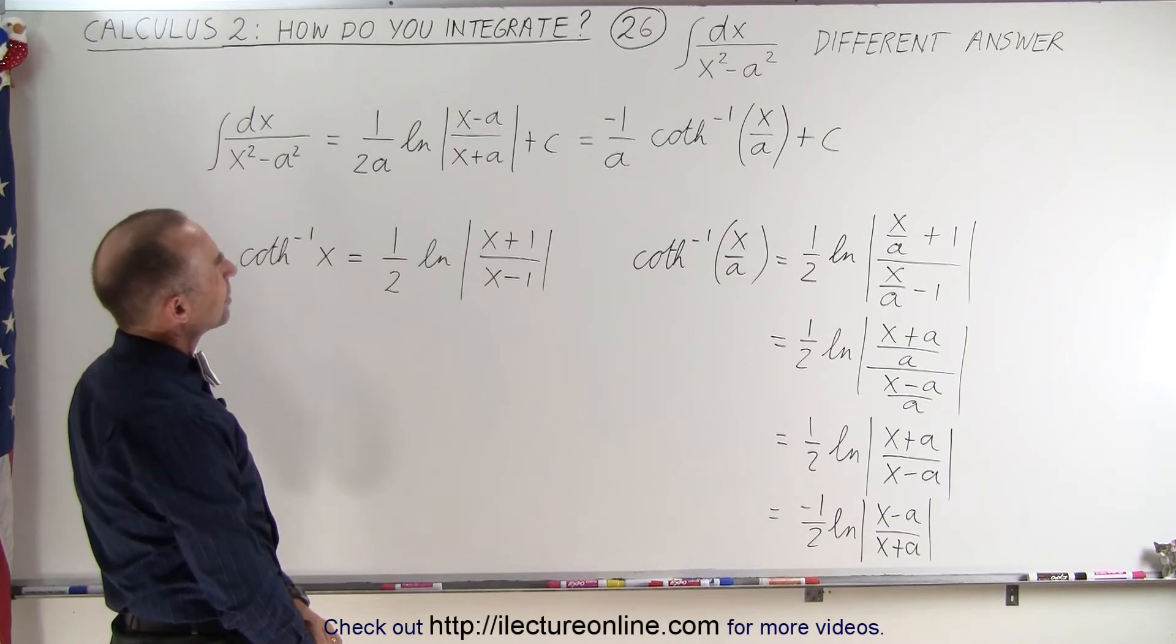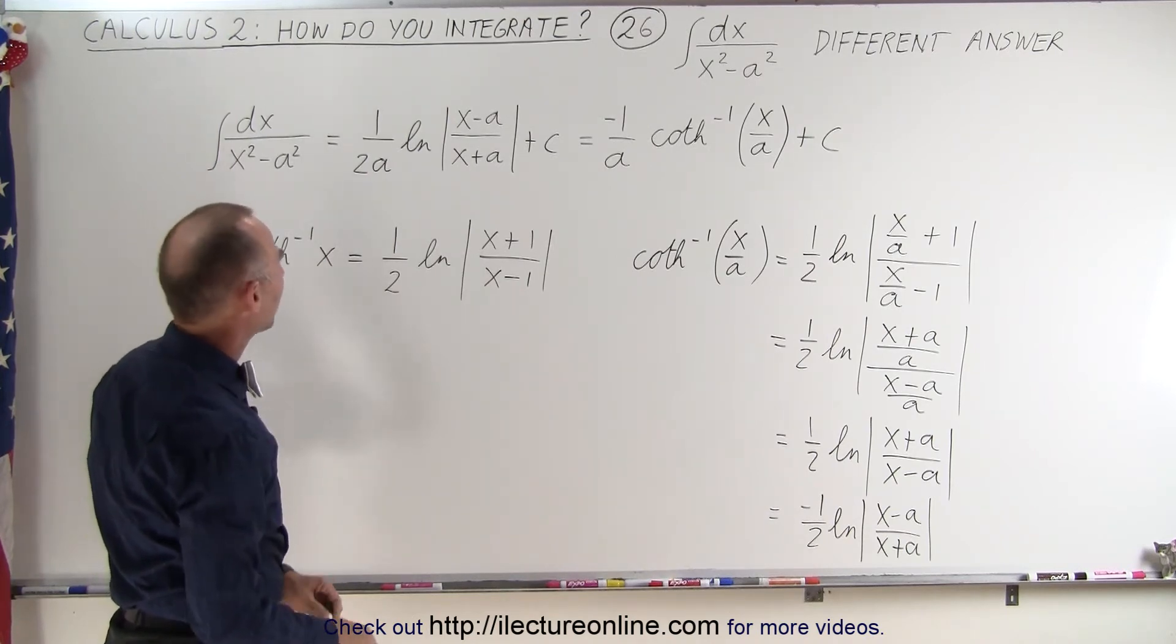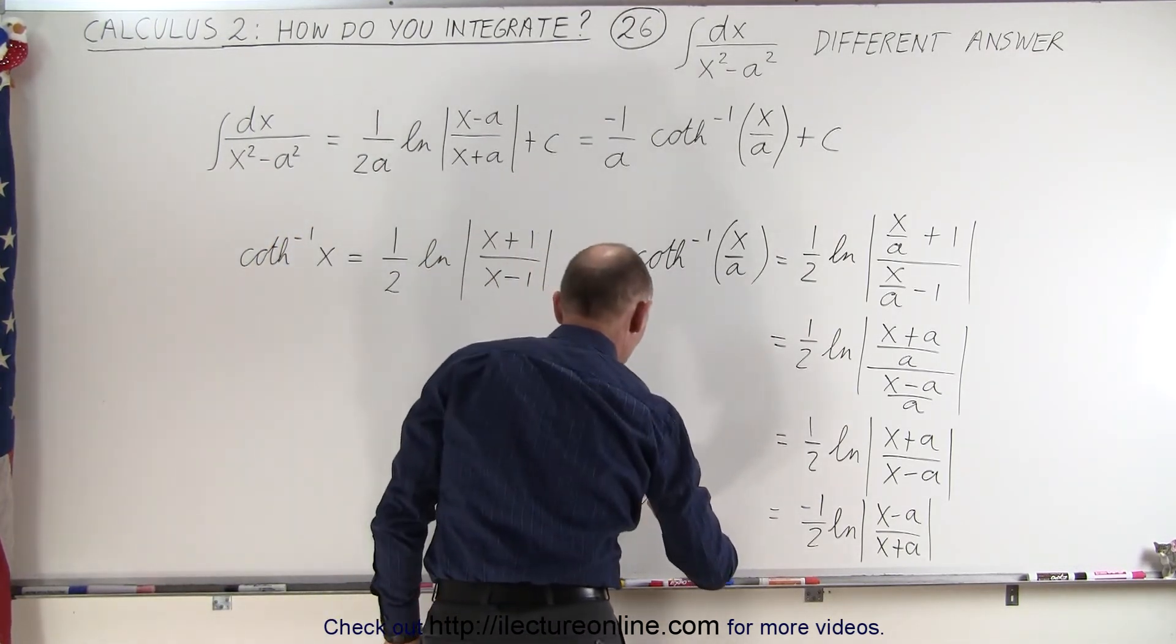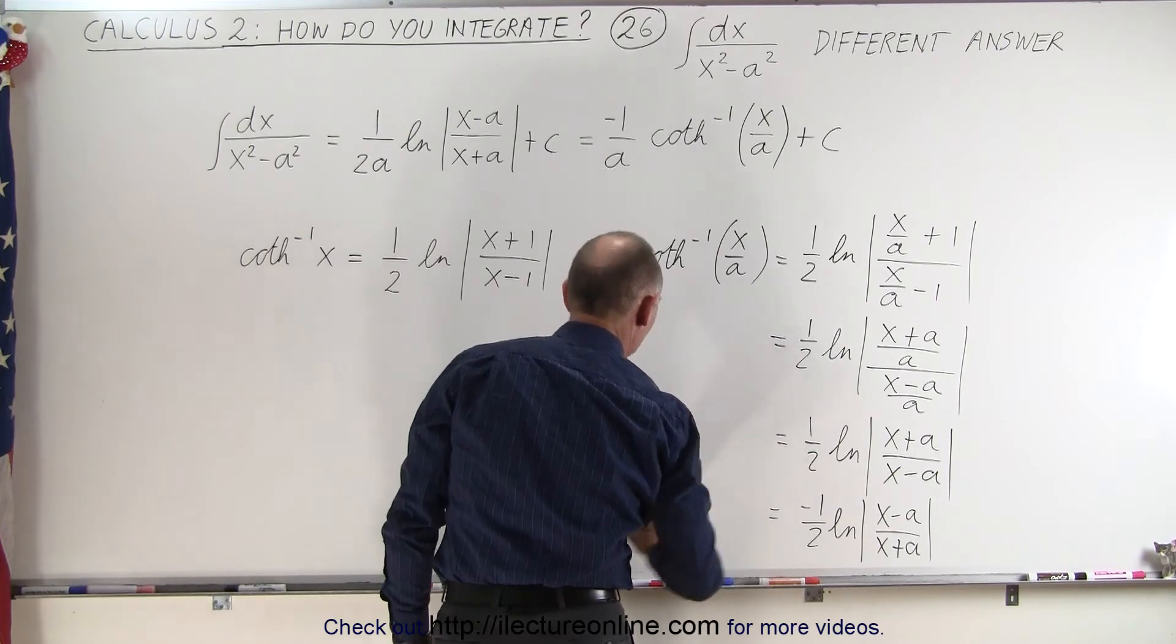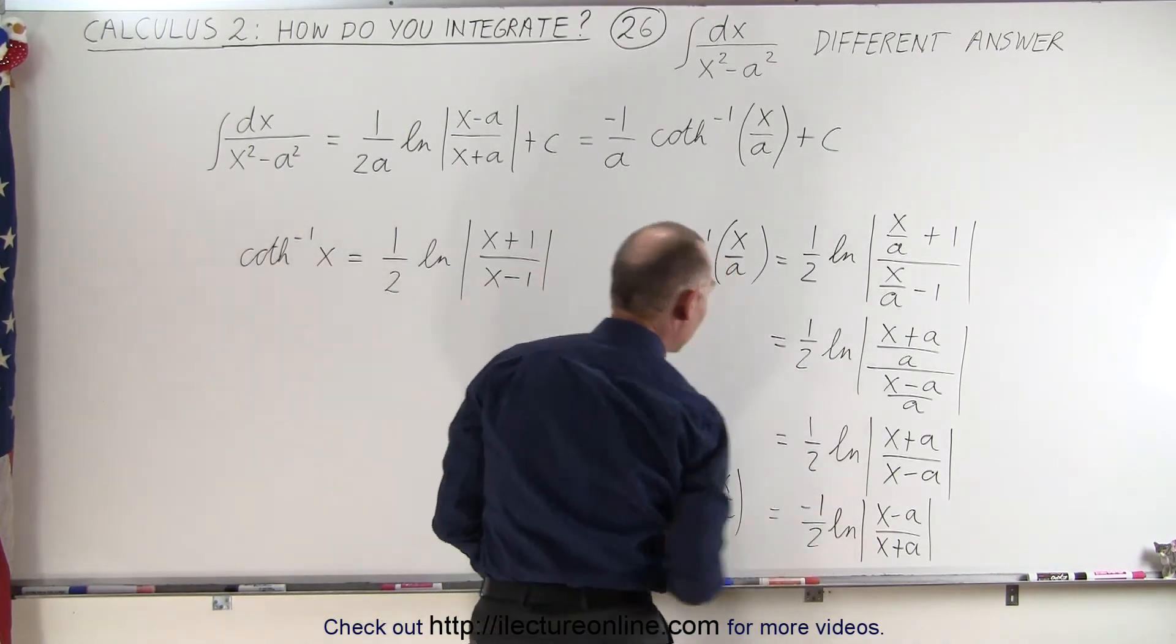So let me go ahead and put this in here, so we can say that the inverse hyperbolic cotangent of x over a is equal to this. And what we want is we want to have a 1 over 2a and a negative.